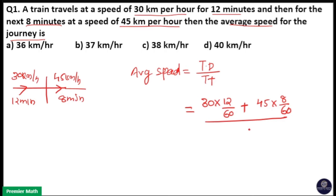Divided by, this is total distance. Total time is equal to 12 plus 8, 20 minutes. So 20 by 60.